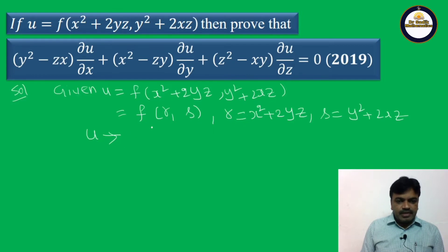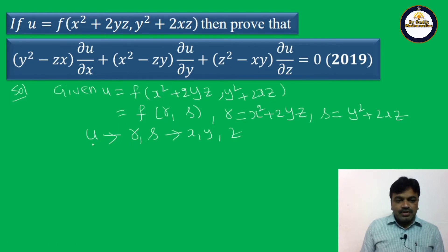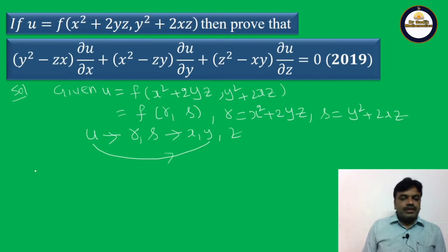u is a function of r comma s, and r comma s is a function of x, y, z. We are finding here ∂u/∂x, ∂u/∂y, and ∂u/∂z. First I want to find the value of ∂u/∂x.